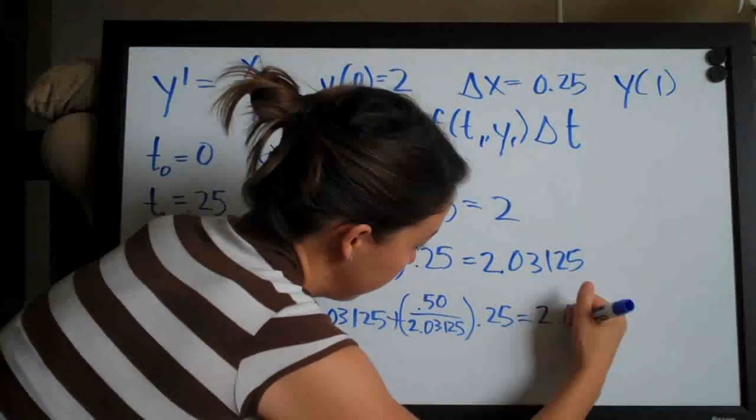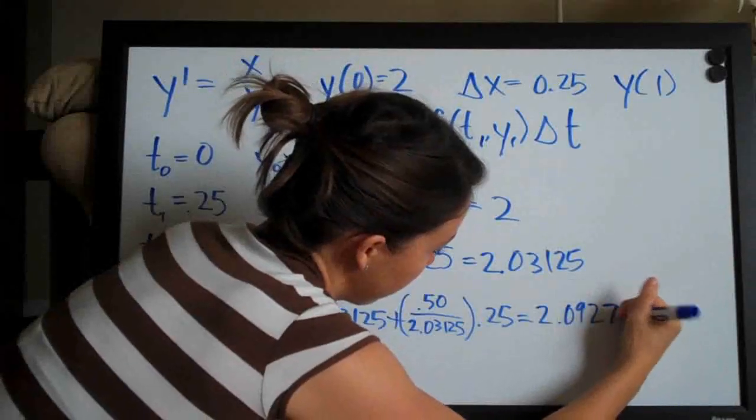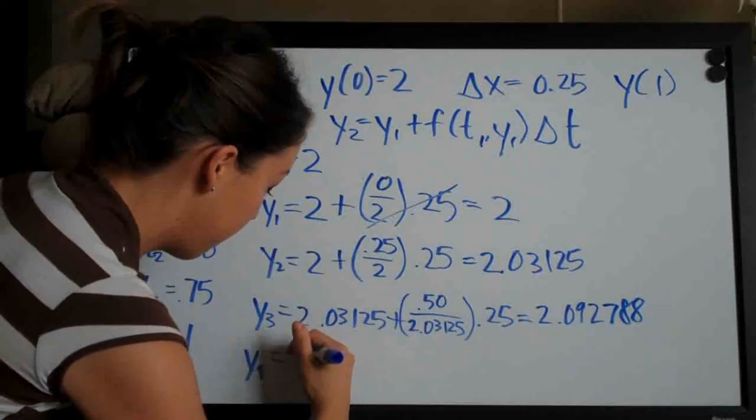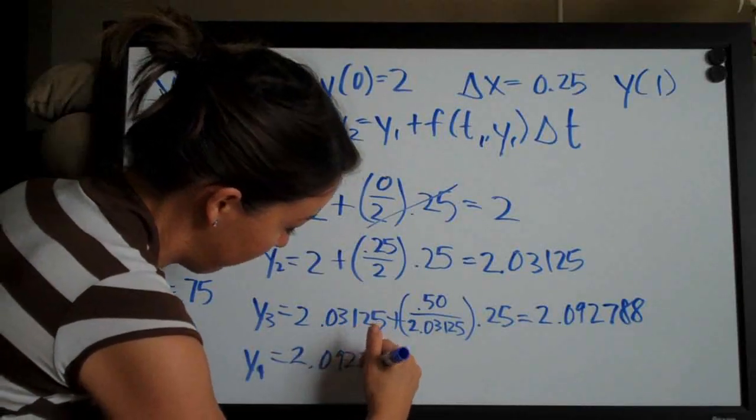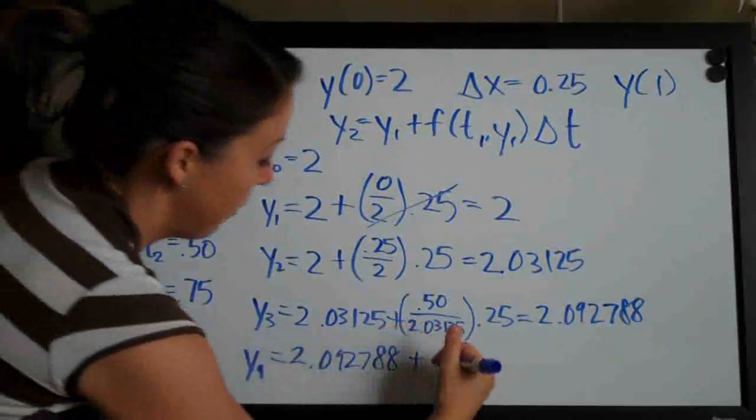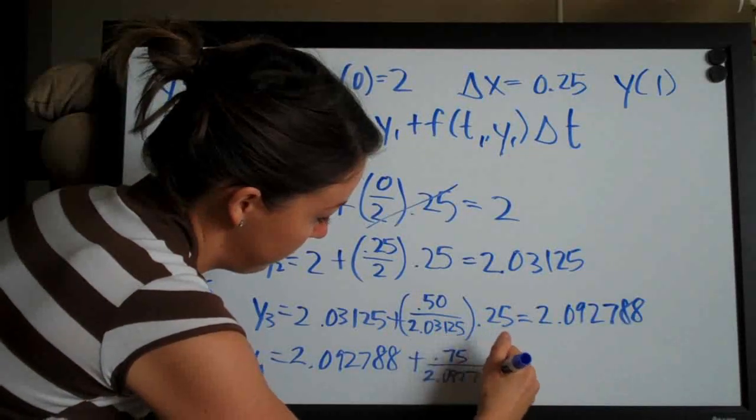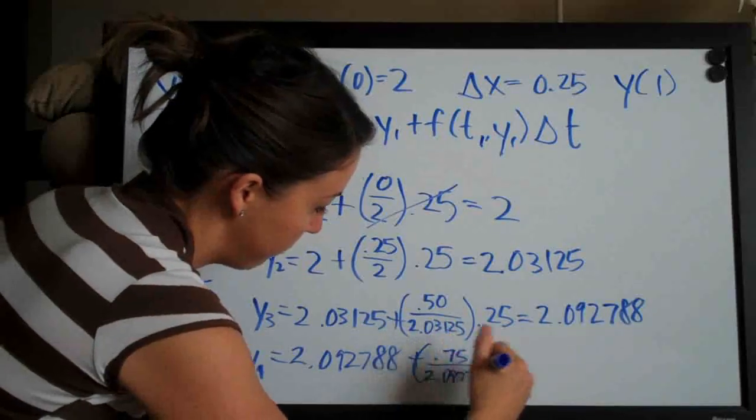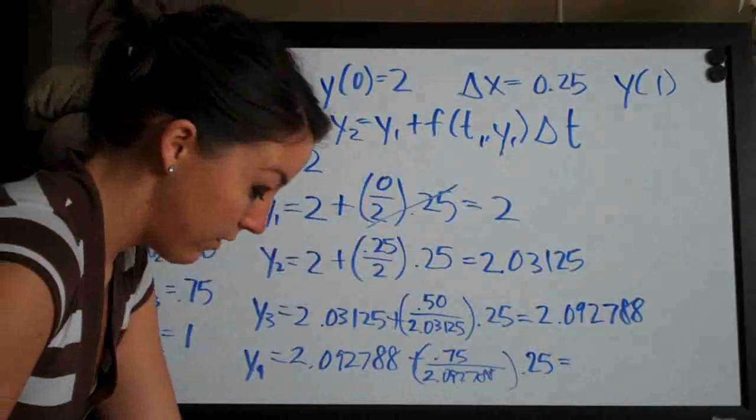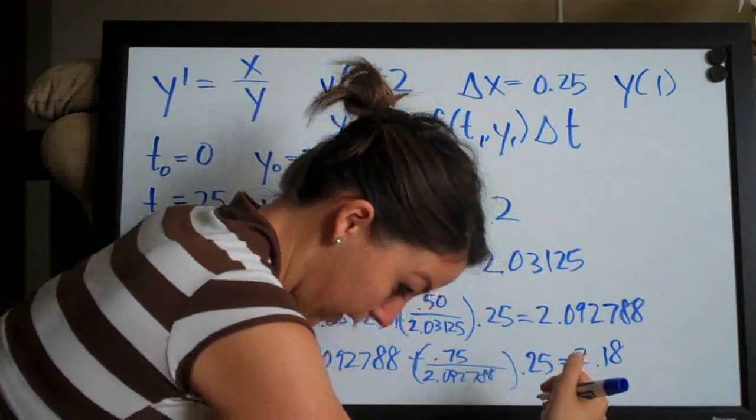And then again using the previous answer, 2.092788, plus again the two previous answers: 0.75 over 2.092788. And multiplying that whole thing by delta x, 0.25. And when we do that, we get 2.182381.